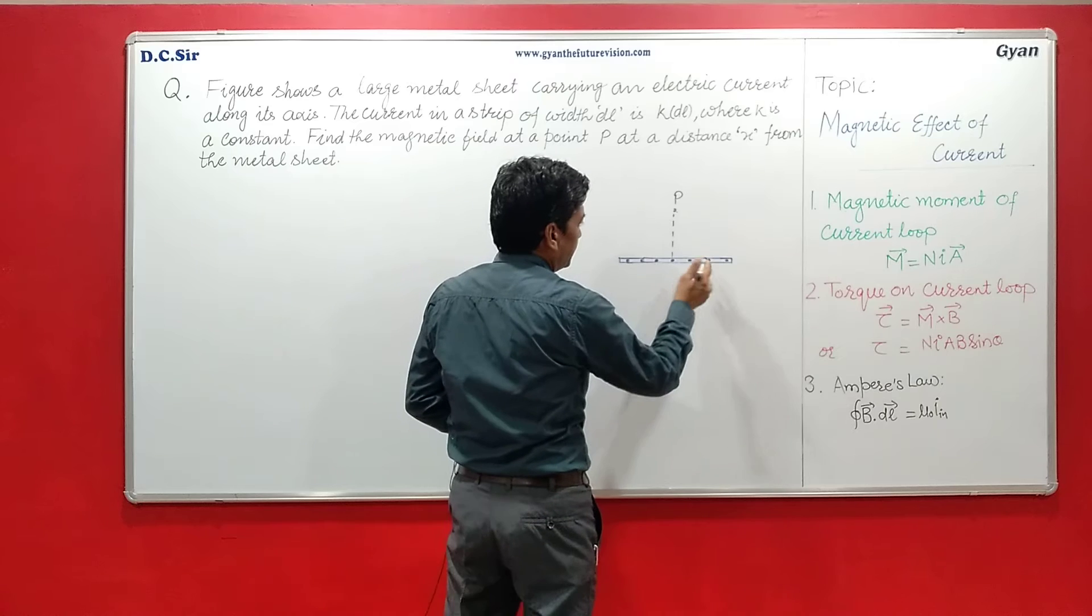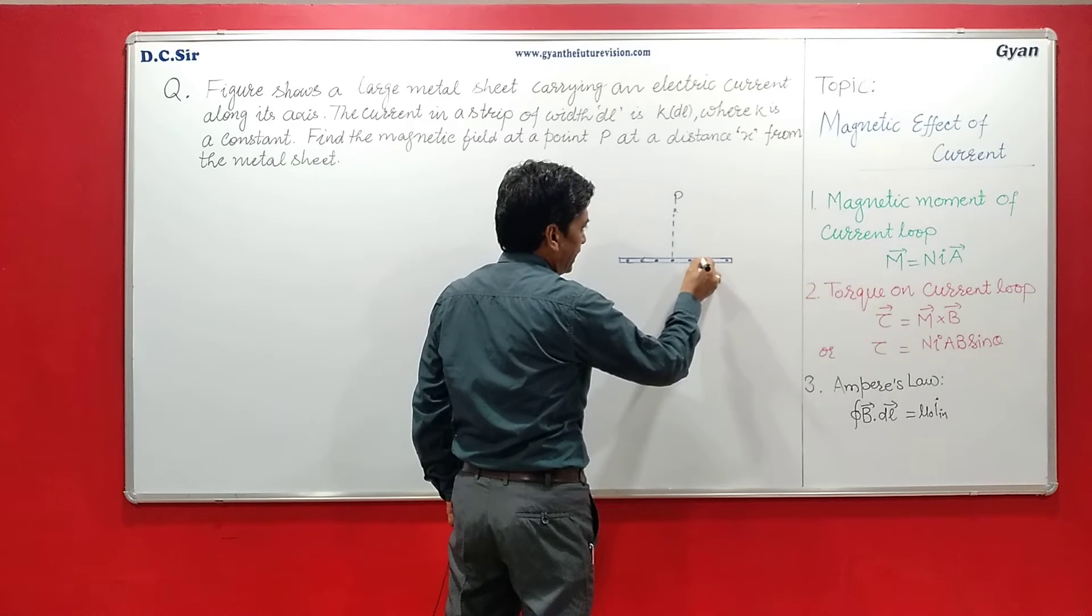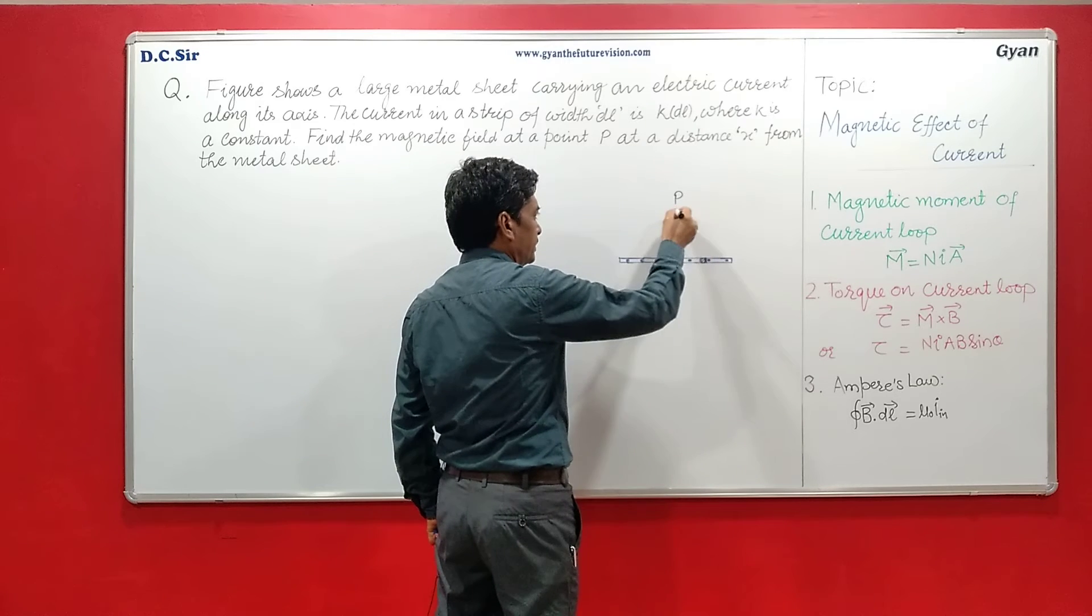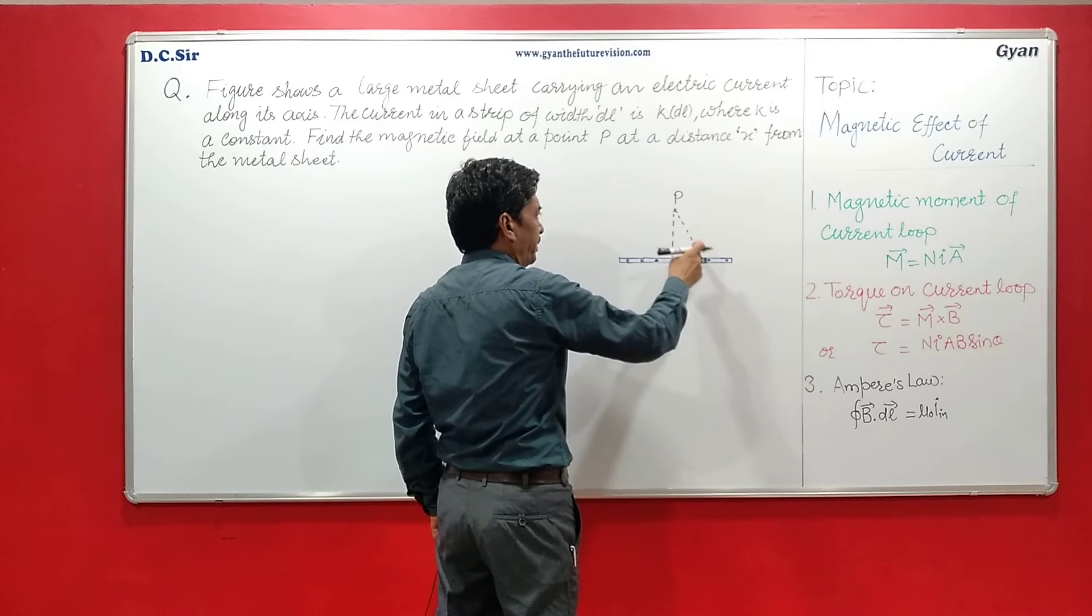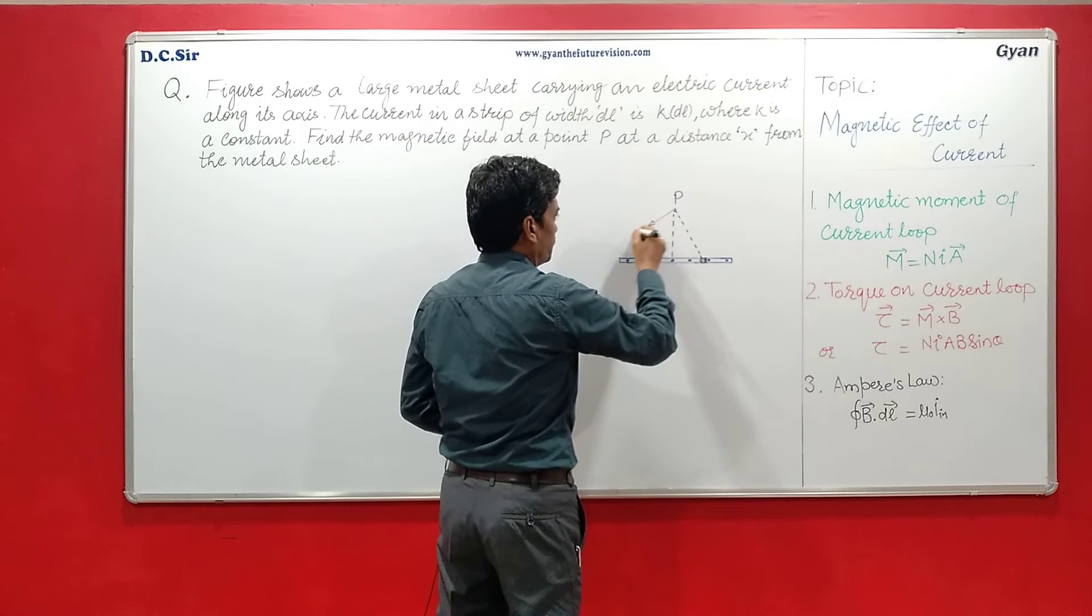So students, we take a small element, it is like a conductor. The magnetic field at this point is perpendicular to this line according to right hand screw rule. So it will be this way.